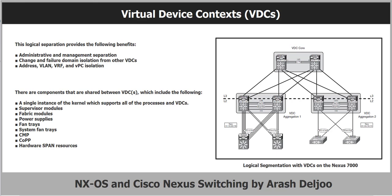There are components that are shared between VDCs, which include: a single instance of the kernel which supports all processes and VDCs, the supervisor module, fabric module, power supplies, fan trays, system fan trays, CMP, COPE, and hardware SPAN resources.